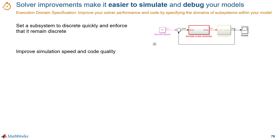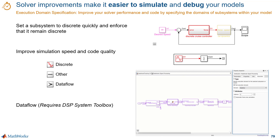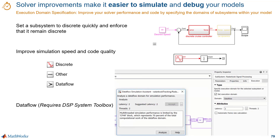Solver resets are one of those solver statistics you can analyze with the solver profiler. They occur when a model has a discrete signal driving a block with continuous states. There is a second aspect to this feature, which is dataflow. Dataflow is a new execution domain that can be used to simulate multi-rate signal processing systems that are computationally intensive. Dataflow requires DSP system toolbox, and you can use this new execution domain to leverage the multiple cores of a host computer because it automatically partitions the model and does the simulation using multiple threads.